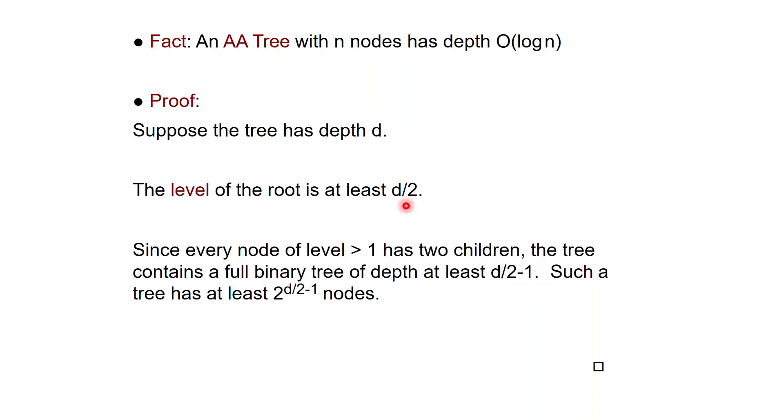And then because we also require that every node of level bigger than 1 has 2 children, then from the root at least for depth d over 2 minus 1, you must have a full binary tree. A tree in which each node has 2 children and such a tree has a number of nodes which is exponential in the depth, 2 raised to d over 2 minus 1.